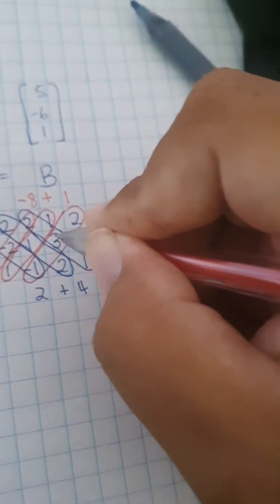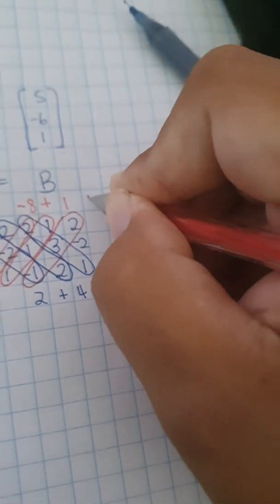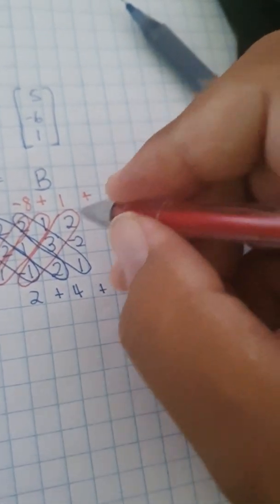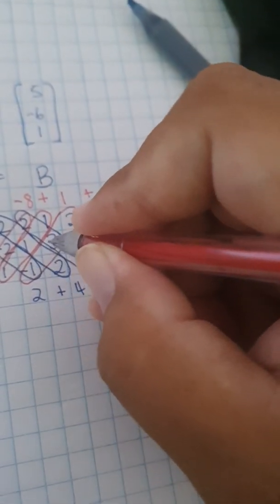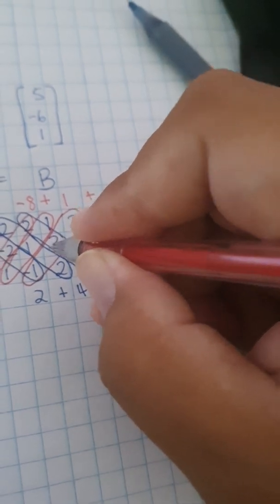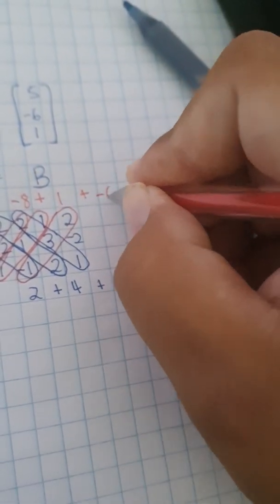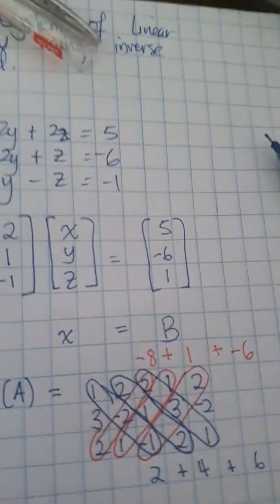the next diagonal. So negative 1 times 3 times 2. We always have plus. Negative 1 times 3, that's negative 3. Negative 3 times 2, that's negative 6. Okay,